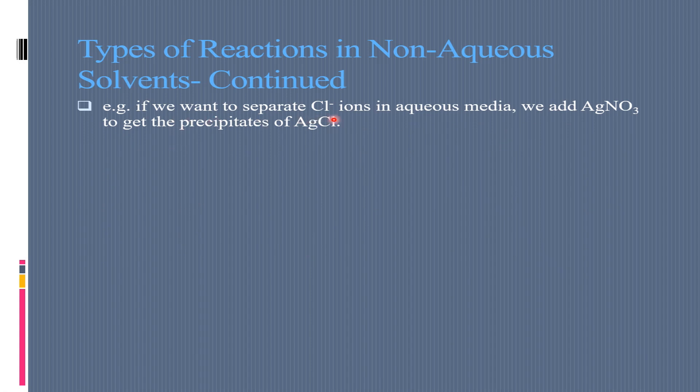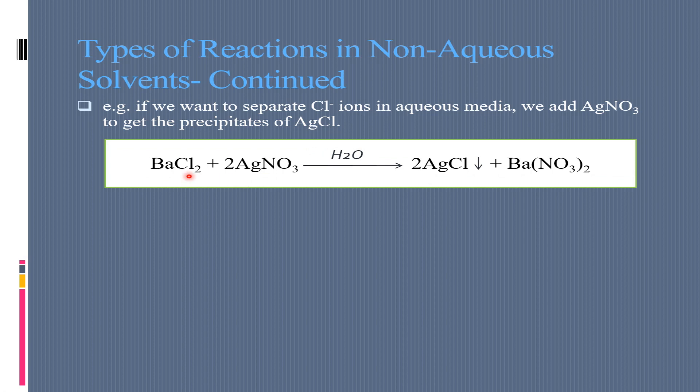For example, if we want to separate chloride ions in aqueous media, we add silver nitrate to get the precipitate of silver chloride. So what we will do, we will react these two compounds, barium chloride and silver nitrate. In this reaction, this will take place in water. This product will become silver chloride in precipitated form. It will also be barium nitrate. Barium nitrate is water soluble compound and silver chloride is water insoluble compound.